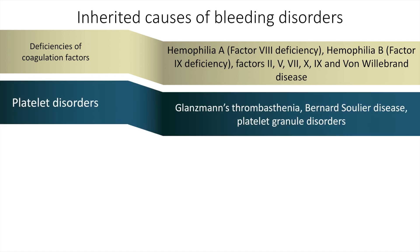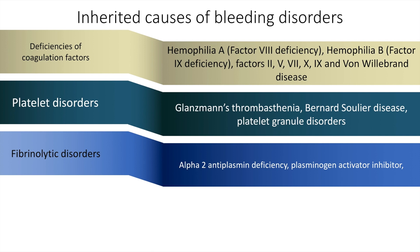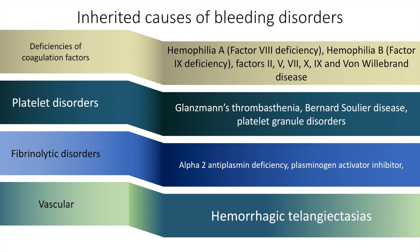Platelet disorders such as Glanzmann's thrombasthenia and Bernard-Soulier disease, along with platelet granule defects like the Hermansky-Pudlak syndrome, can also cause bleeding manifestations. Fibrinolytic disorders such as alpha-2 anti-plasmin deficiency and deficiency of plasminogen activator inhibitor can cause bleeding. Inherited vascular causes include hereditary hemorrhagic telangiectasia, also known as Osler-Weber-Rendu syndrome.